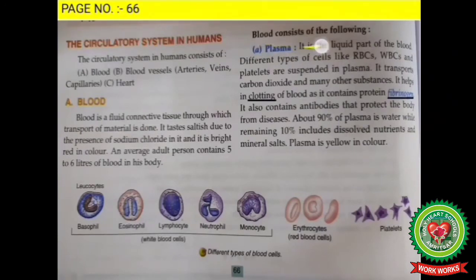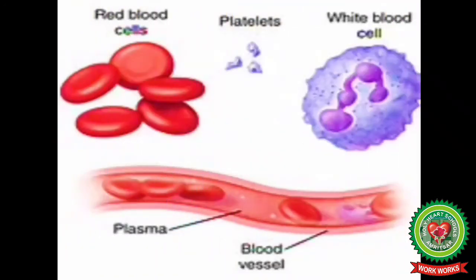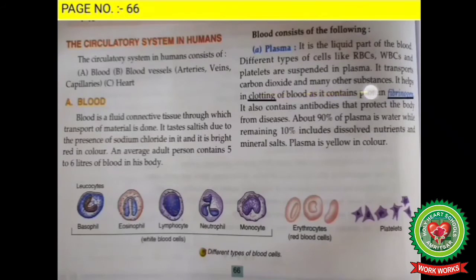Blood consists of the following components: plasma, which is the liquid part of the blood. Different types of cells like RBCs, WBCs, and platelets are suspended in the plasma. Plasma transports carbon dioxide and many other substances, and it helps in clotting of blood as it contains fibrinogen.